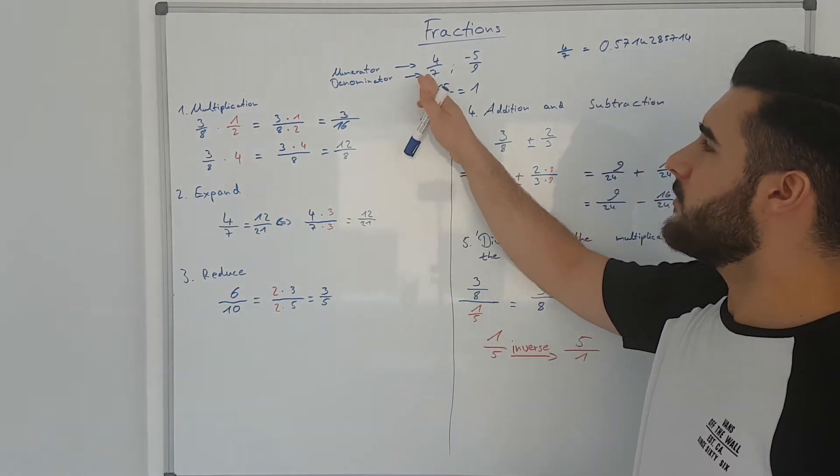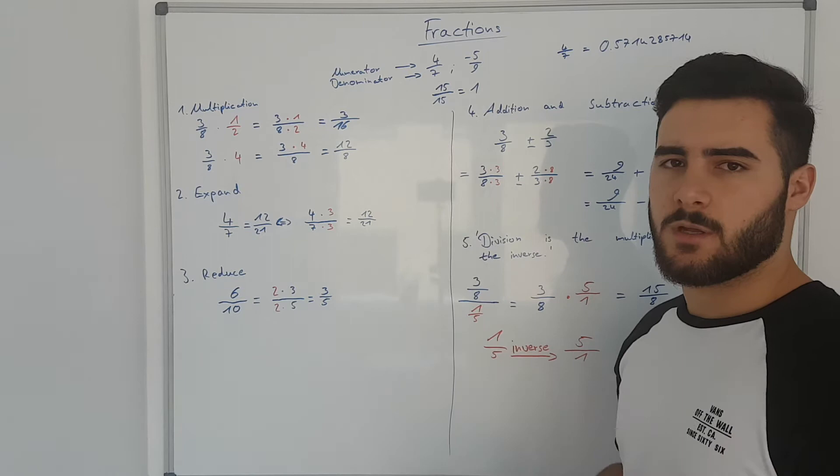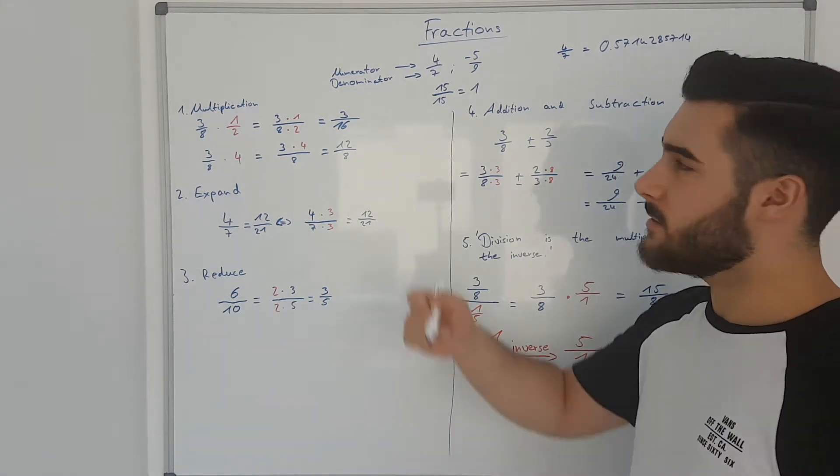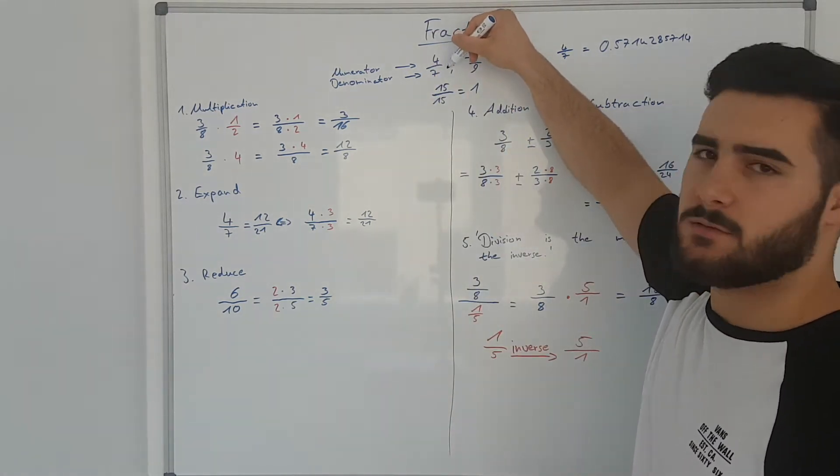So this is for example a fraction and you pronounce it like 4 over 7 and it consists of a numerator and a denominator.